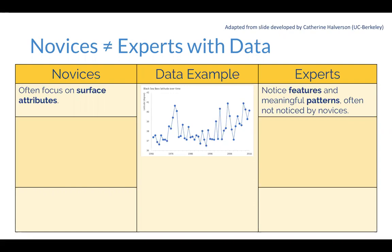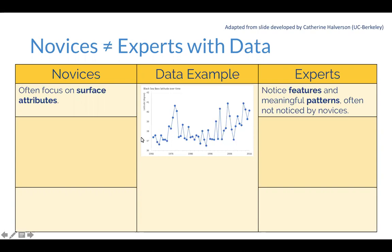We're looking at the average latitude — the center average location — where every black sea bass recorded in a given year was found. This is a time series with time along the x-axis, from the mid-1960s to the mid-2010s. As experts familiar with time series data, even if you know nothing about black sea bass, you can generally look at this graph and see there's an increasing trend: over these decades, the average latitude where we find black sea bass has increased. Yes, there's variability — it goes up and down — but the general trend is an increase. Whereas novices get really stuck on this, because the up-and-down is the surface attribute. It's hard for them to blur their vision of those surface attributes to see the overall trend.